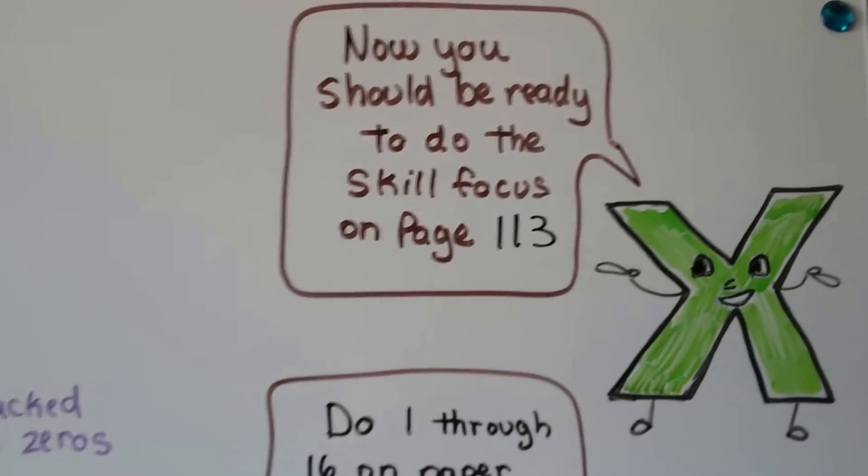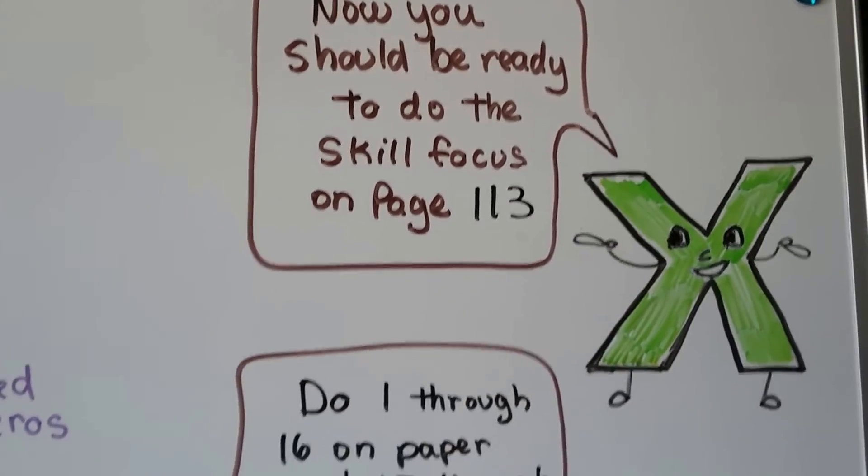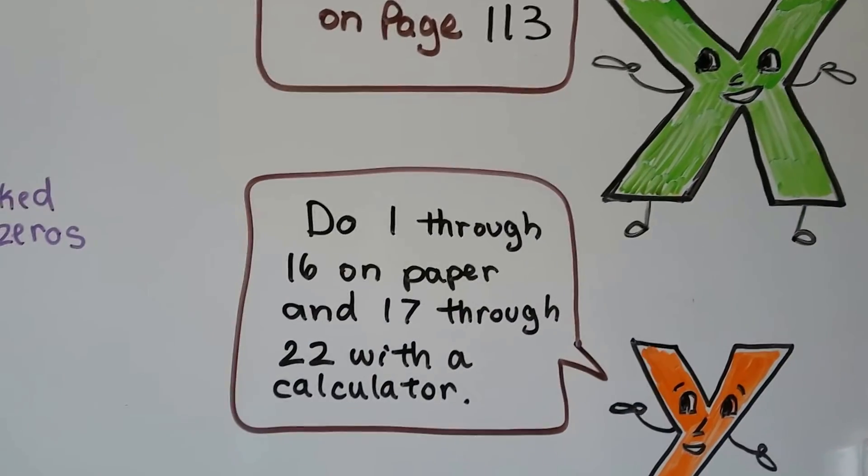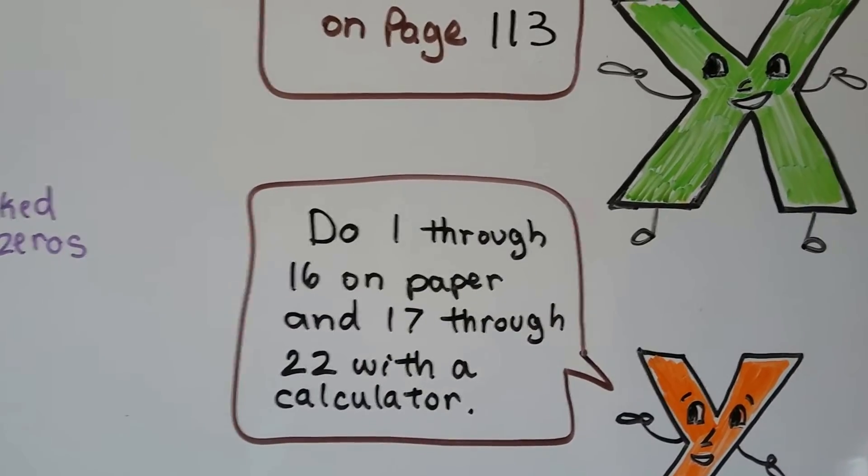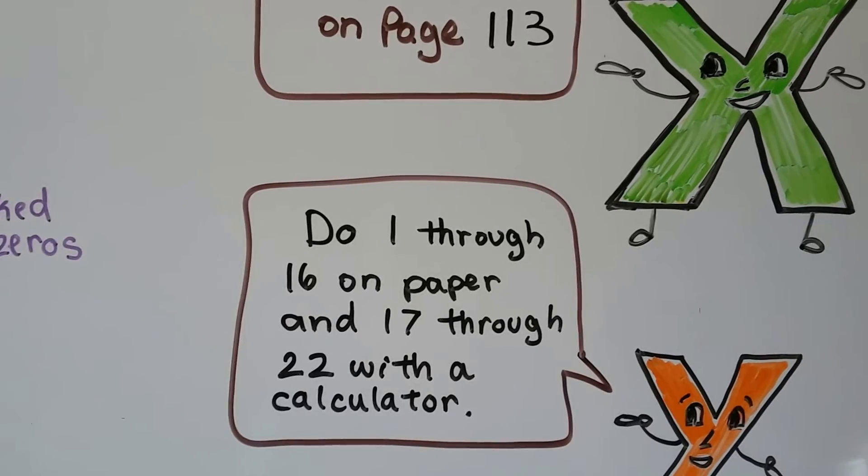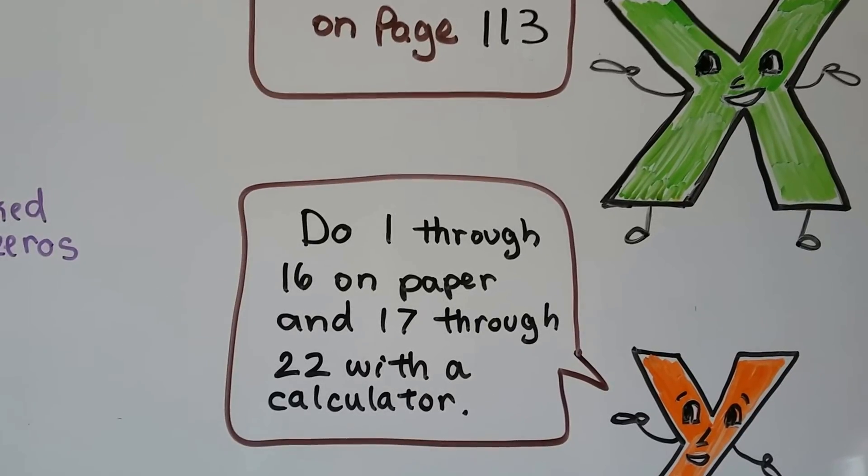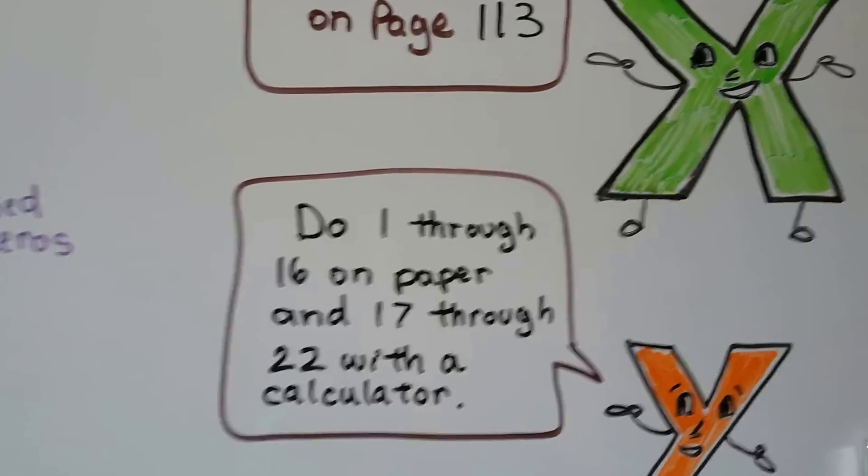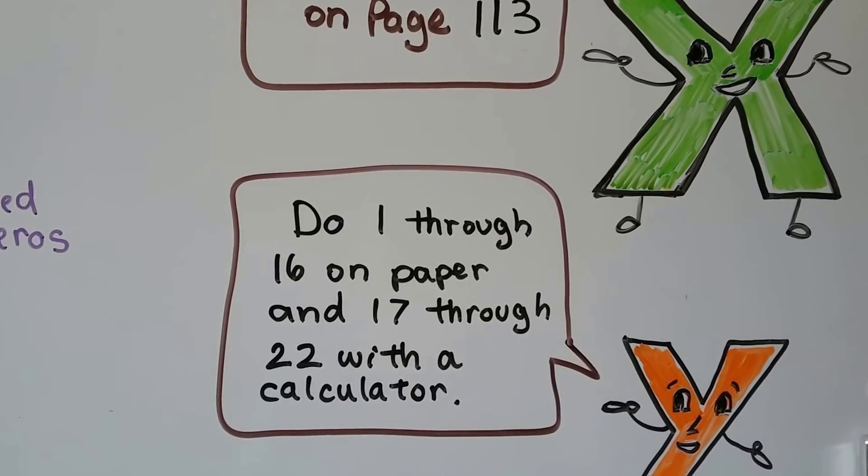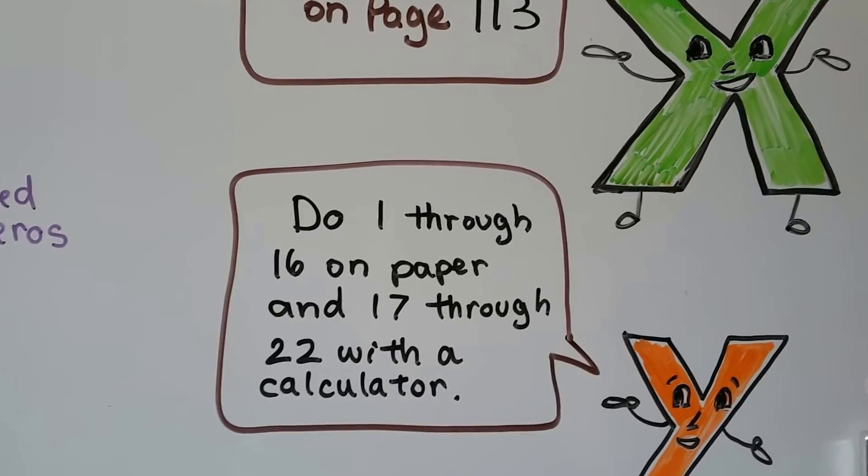So now you should be ready to do the skill focus on page 113. And it wants you to do one through sixteen on paper with paper and pencil. And then you can do number seventeen through twenty-two with a calculator. So give yourself a chance. Do one through sixteen with paper and pencil to give yourself more practice.